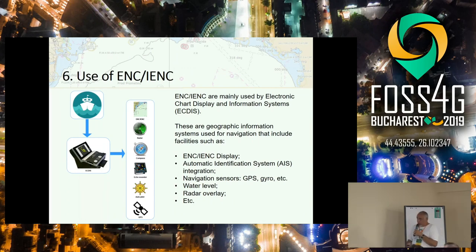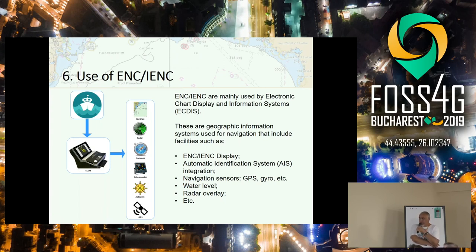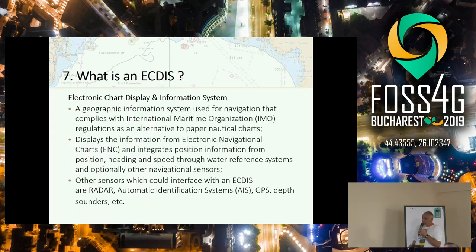About the use of this kind of maps: the first use is in the Electronic Chart Display and Information System, which is usually on board vessels. You just upload the maps and connect it with the positioning device, and also with radar data and other systems like weather and so on. About displaying the information: integrate the position, heading, speed, and information about the water level, about the draft of the vessel — these have high update rates and must be in real time.